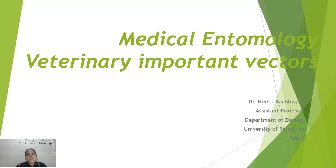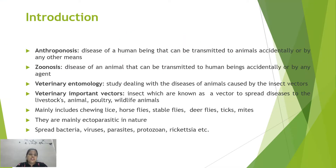Hello everyone. In the previous video we discussed medically important vectors, and now we are covering veterinary important vectors. There are two related terms: anthroponosis, which refers to infectious diseases caused in human beings that are transmitted to animals accidentally or by other means, and zoonosis, which is the infectious disease of animals that can be transmitted to human beings accidentally or by any other vector.